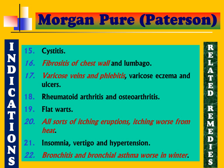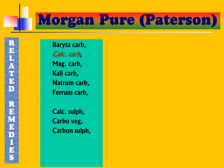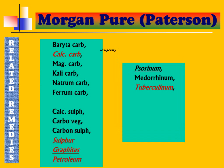Insomnia, vertigo, hypertension, bronchitis, and bronchial asthma worse in winter complete the Morgan Pure picture. First decide whether it is a Morgan, then differentiate which Morgan, as each shares common features. The related remedies for Morgan Pure include various carbs — with Calcarea carb most prominent — then Calcarea sulph, Carbo veg, Carbon sulph, and among others Sulphur, Graphitis and Petroleum. Tuberculinum is the prominent nosode associated. From this list, observe which remedy's symptoms are cropping up in the patient.